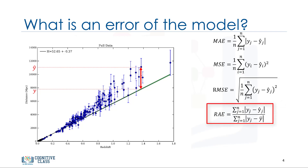Relative absolute error, also known as residual sum of squares, where y-bar is the mean value of y, takes the total absolute error and normalizes it by dividing by the total absolute error of the simple predictor.